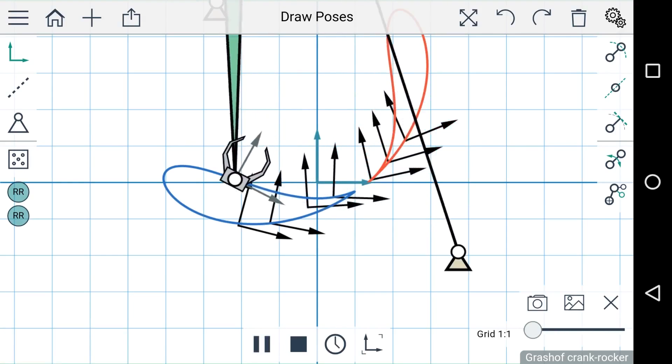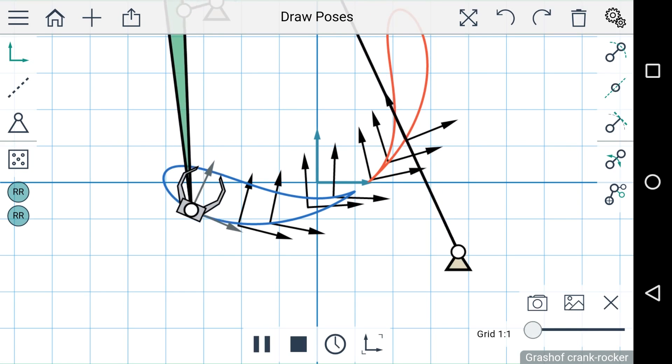So now that we've seen how to synthesize the mechanism using five or more pose constraints, what can we do with fewer than five pose constraints?